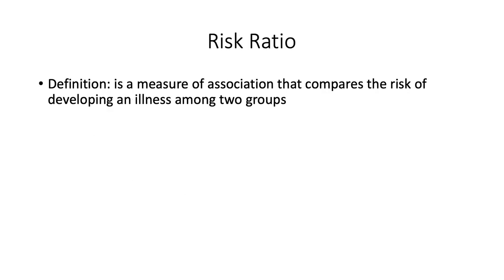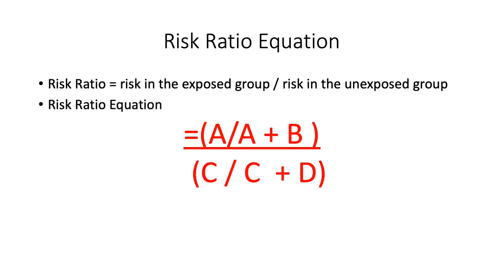A risk ratio is a measure of association that compares the risk of developing an illness among two groups. To calculate the risk ratio, we divide the risk of developing an illness in the exposed group by the risk of developing an illness in the unexposed group. The slides show the equation used to calculate the risk ratio.